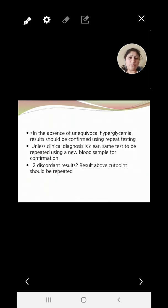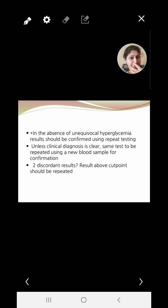In the absence of unequivocal hyperglycemia, results should be confirmed by repeat testing at different time intervals before reaching a conclusion. The same test should be repeated using a new blood sample for confirmation. If the result is substantiated by the clinical diagnosis, then proceed with that diagnosis.